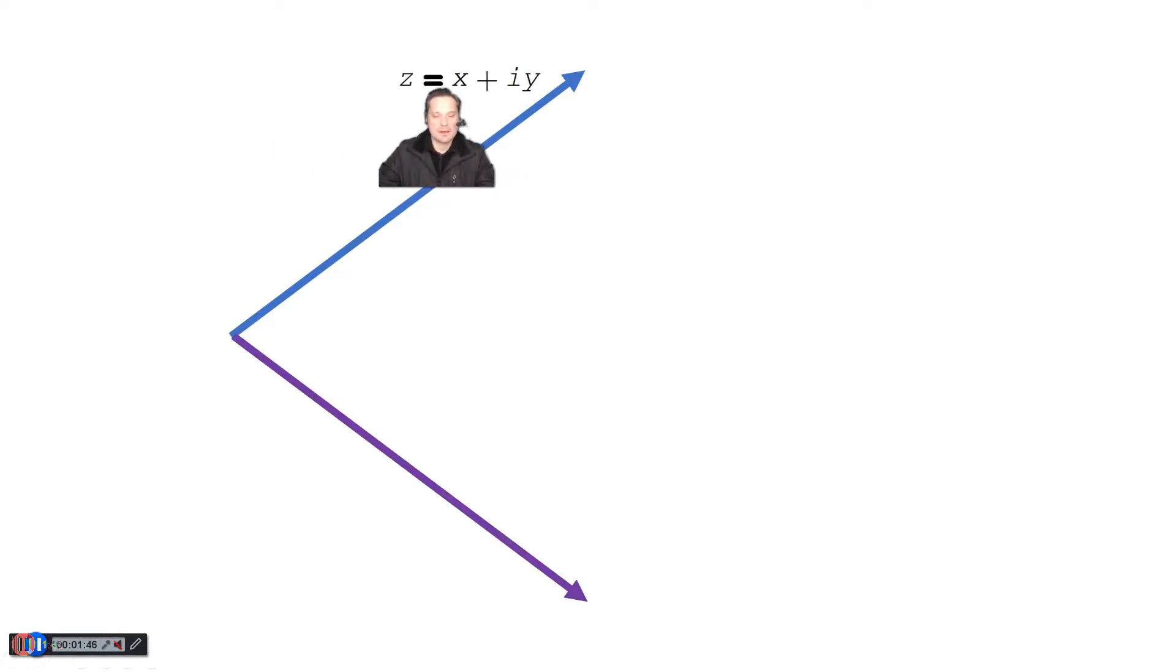We can also take a look at it graphically speaking. So if this is my complex number x plus yi, so z equals x plus yi, then on the bottom, that other arrow there, that would be the conjugate. So that is equal to z bar equals x minus yi.